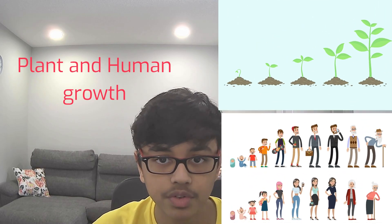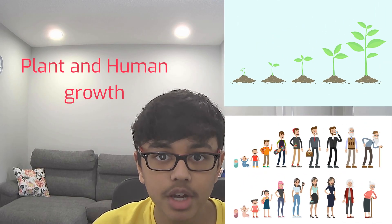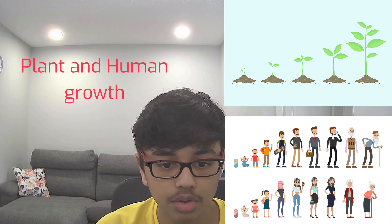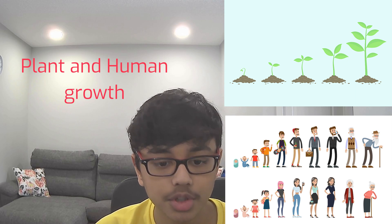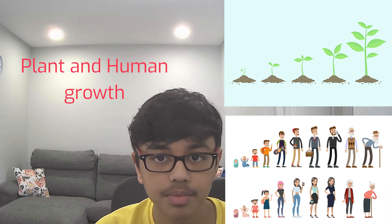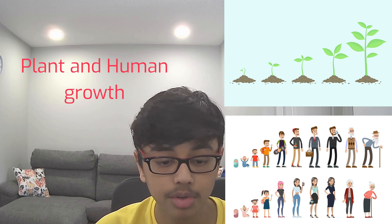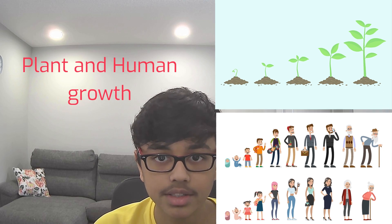Our fourth characteristic is growth. All living organisms always grow. For example, any plant grows from a tiny seed, while you who are currently watching this video grew from a baby to your present size. And to grow, humans need proper food while plants need water and sunlight.